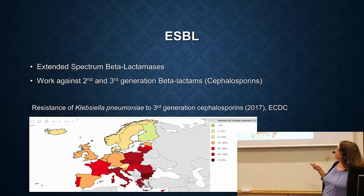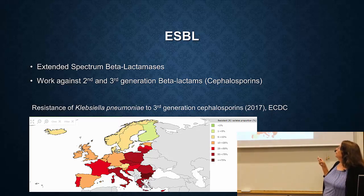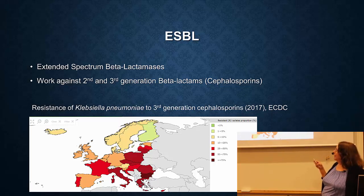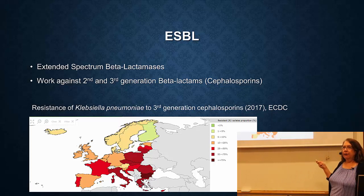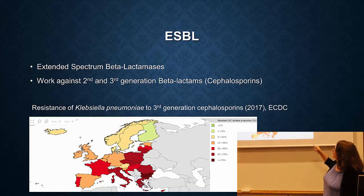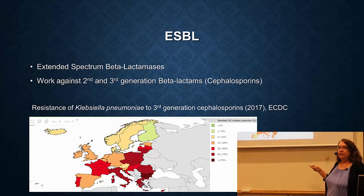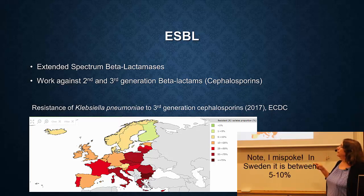Here is a map of Europe showing the resistance of Klebsiella pneumoniae to the third generation cephalosporins. This is data from 2017. Red is bad, green is good. In Greece and southern Europe you have numbers like 50% to 75% of this bacteria being resistant to cephalosporins - that's ESBL. In Sweden it's between 1% and 5%.